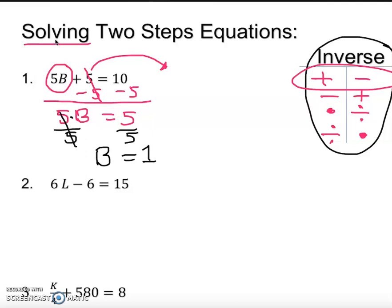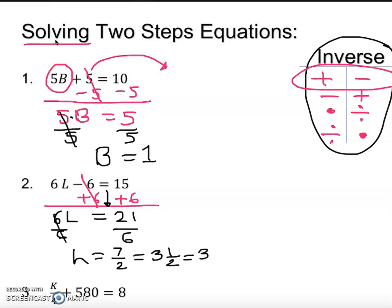Number 2, we do the same thing. We do positive 6 on both sides to cancel out. Drop down 6L, which in this case is going to give you 21. Then same deal, divide by 6. L equals, you can have improper fraction which is 7 over 2, or mixed fraction 3 and 1 half, or decimal 3.5. Whatever your question asks, you just take that answer.